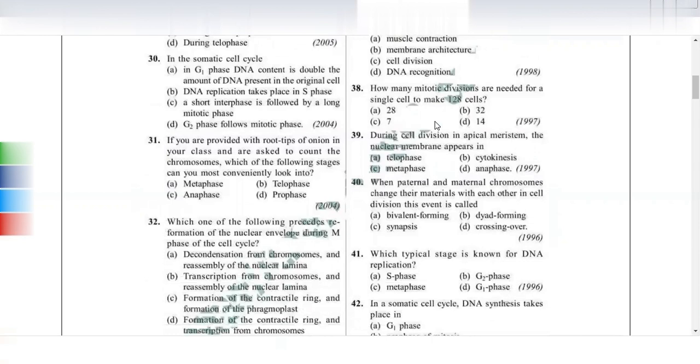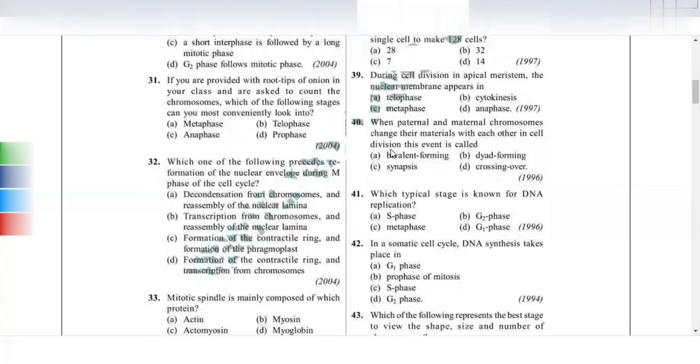How many mitotic divisions are needed for a single cell to make 128 cells? Let's calculate: one to two is one mitotic division, two to four is two divisions, four to eight is three divisions, eight to sixteen is four divisions, sixteen to thirty-two is five divisions, thirty-two to sixty-four is six divisions, and sixty-four to 128 is seven mitotic divisions. Answer is 7. During cell division of apical meristem, the nuclear membrane appears in telophase.